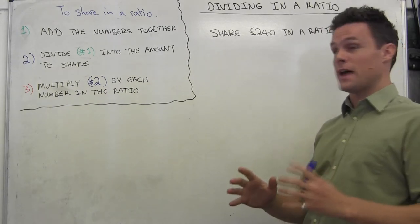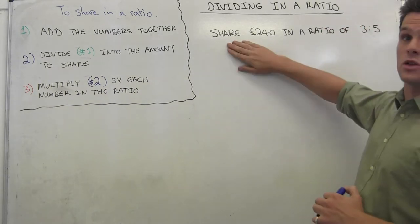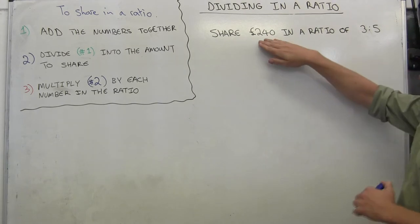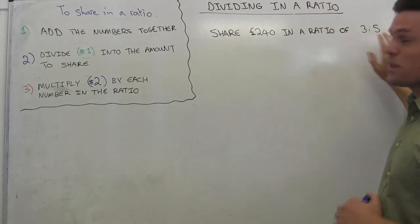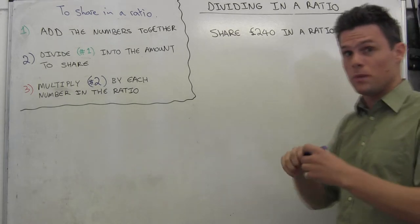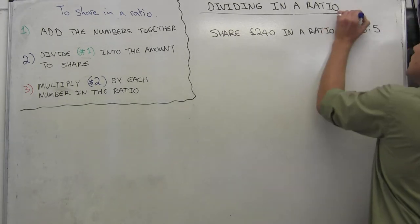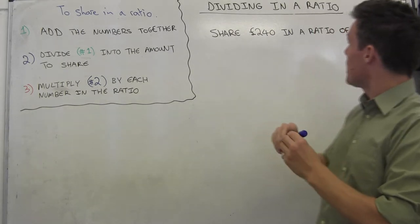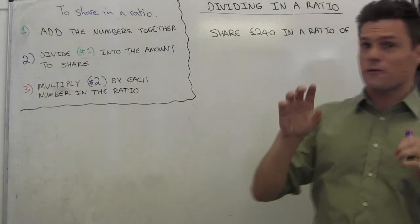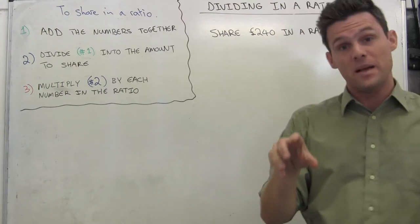Assuming that you've done that, we're going to continue with this question here: share £240 in a ratio of 3 to 5. Now what that means is, I want you to imagine we've got two people, Jeff and Bill, and we're sharing £240 so that for every 3 pounds that Jeff gets, Bill gets 5.